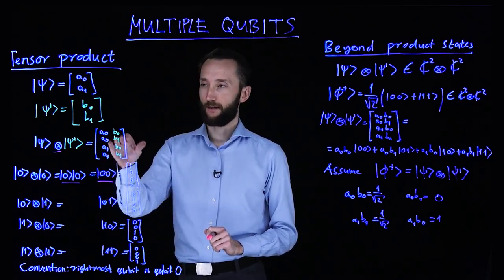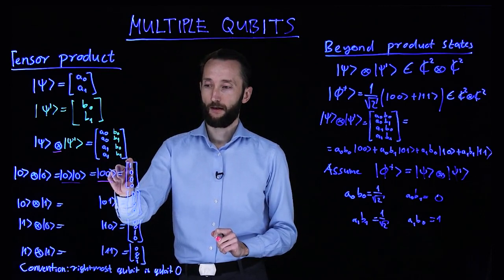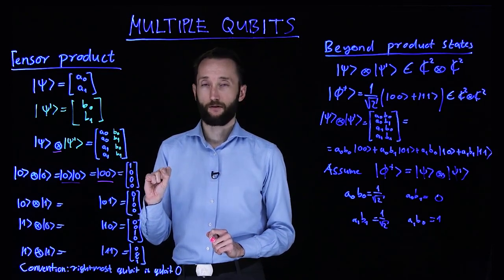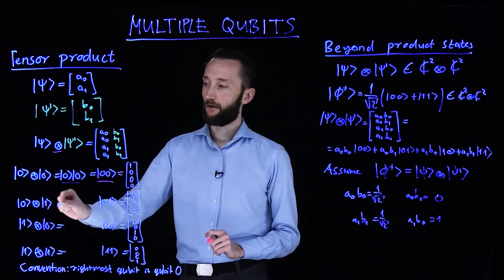And if you calculate this product, then you end up with the first canonical basis vector of the four-dimensional space.